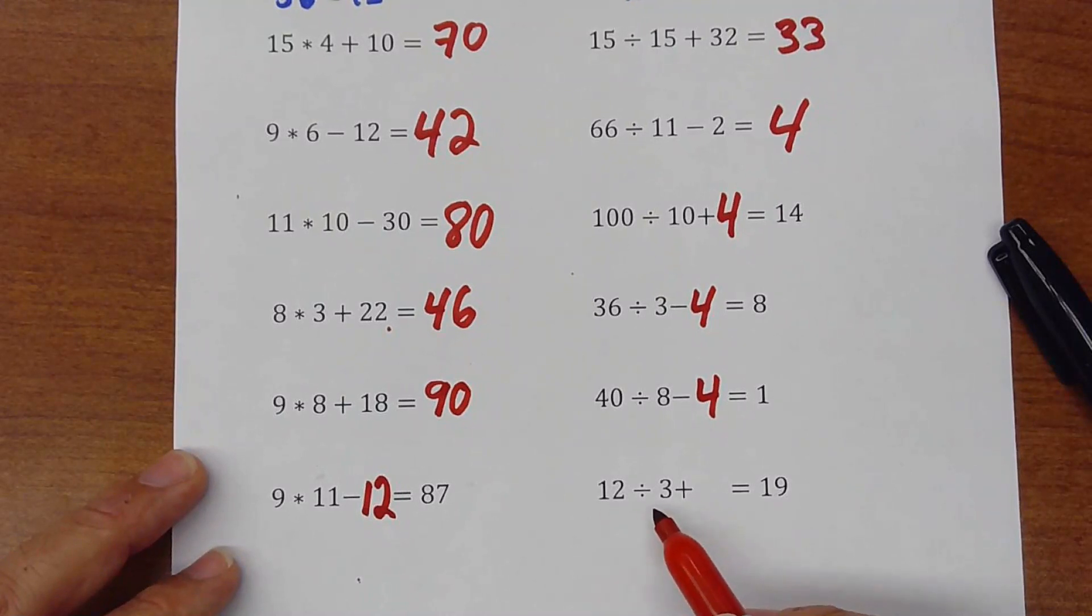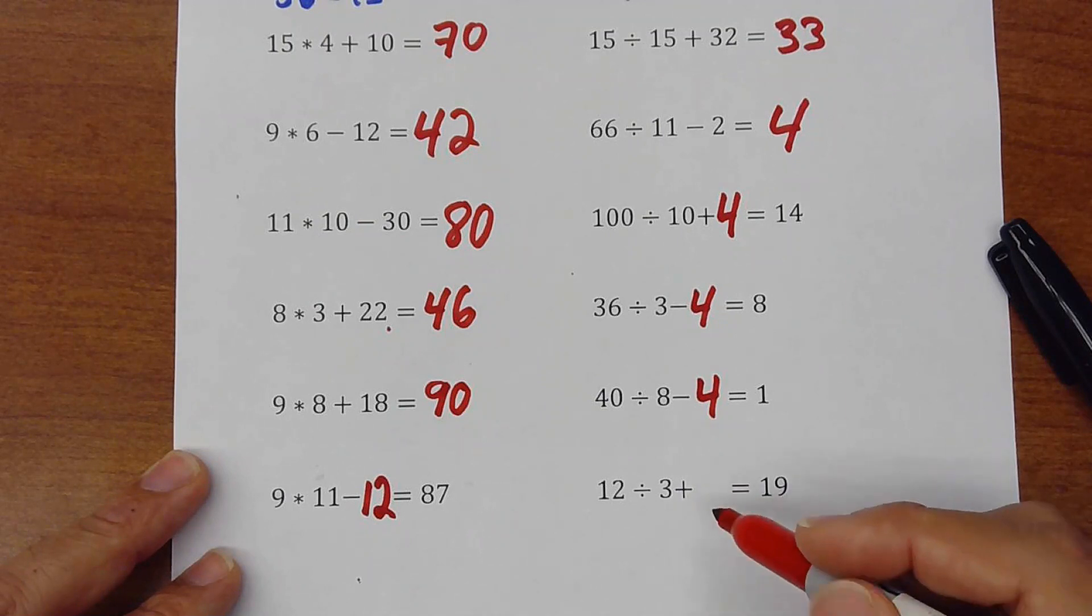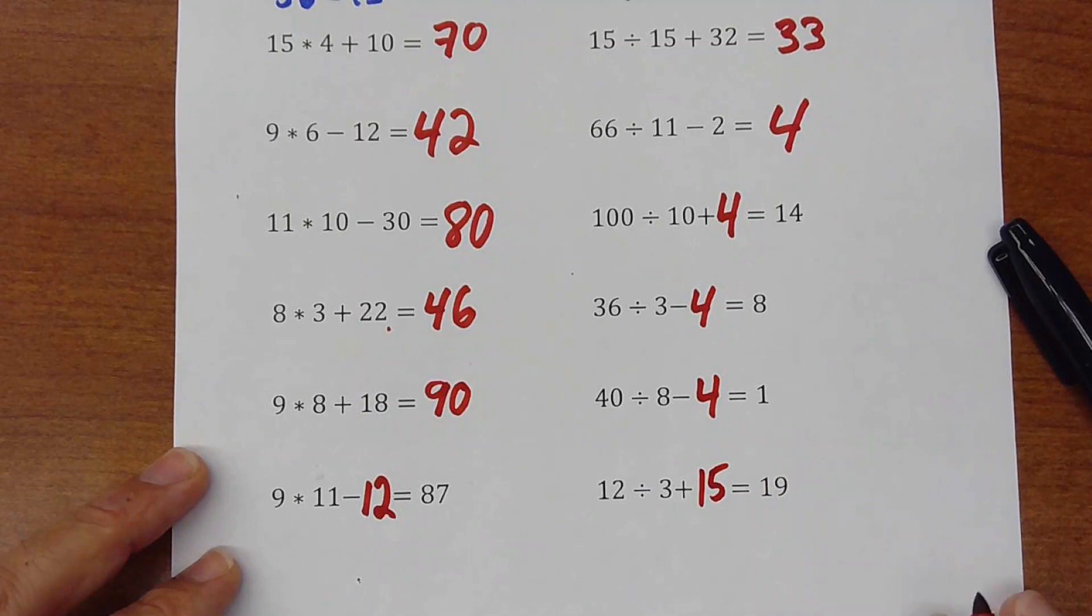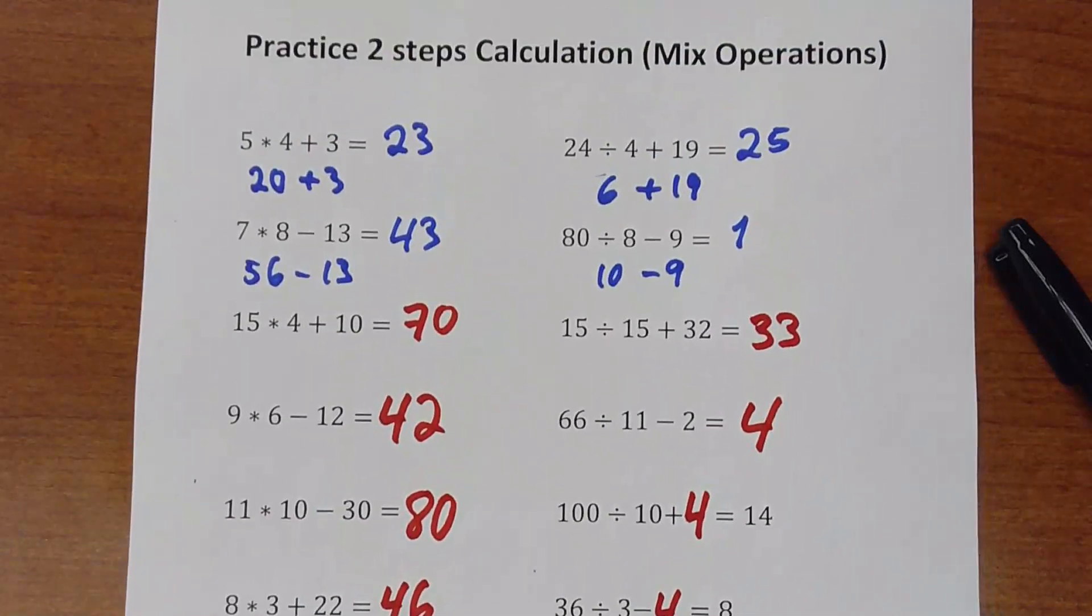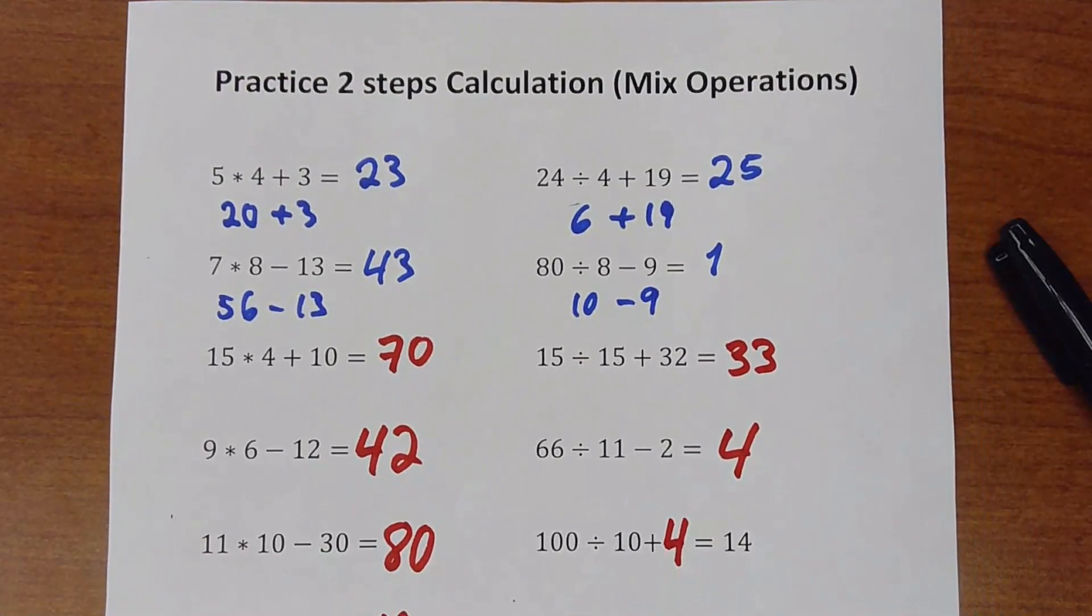And here we have 12 divided by 3, 4 plus something is 19. So 4 plus something, that something would be 15. 4 plus 15 it would be 19. So I recommend you to just check your answers, pause the video, try to do it by yourself and ready to go.